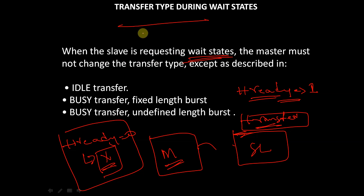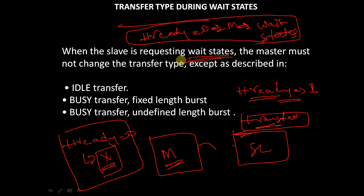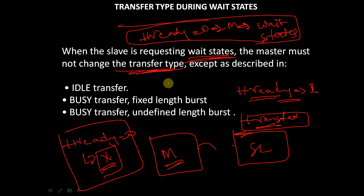So when HREADY is equal to 0, the slave is requesting wait states. The master inserts wait states so that the transfer can be paused for some duration of time. With the help of HREADY, when the slave is requesting wait states, the master must not change the transfer type.